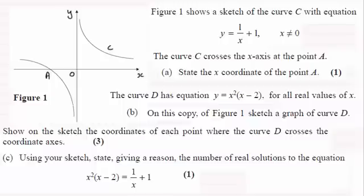Okay, welcome back then if you had a go. So in Figure 1 we're given this curve y equals 1 over x plus 1, x not equaling 0, and we're told that this curve C crosses the x-axis at this point A and we've got to state the x-coordinate of point A.